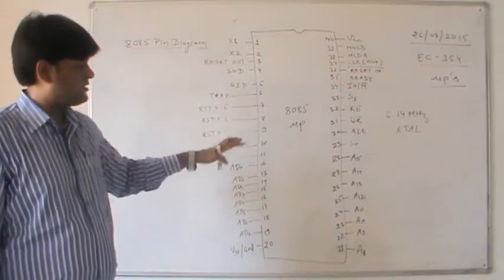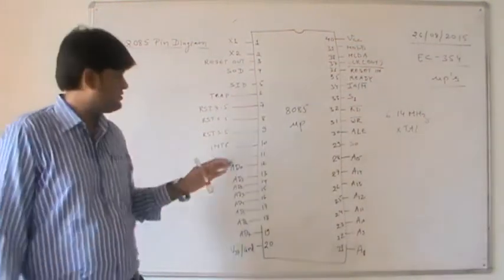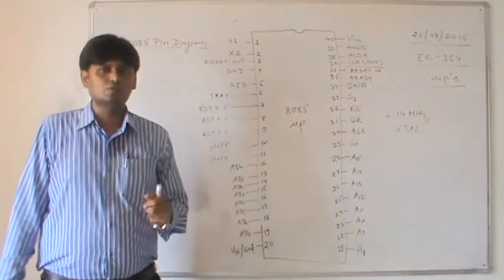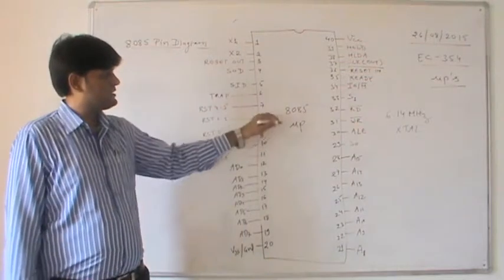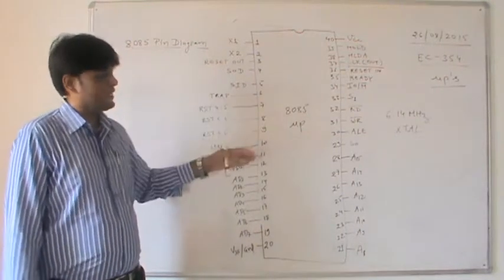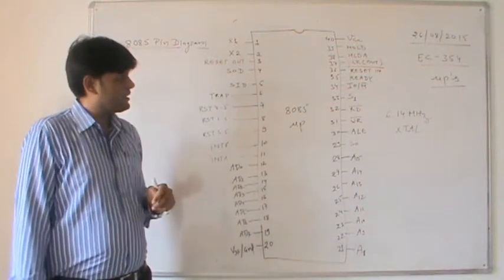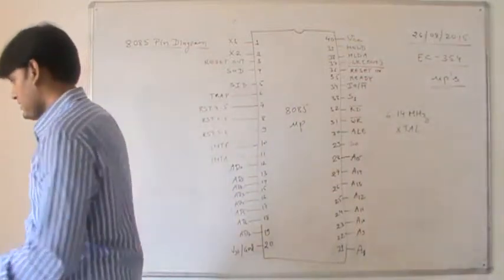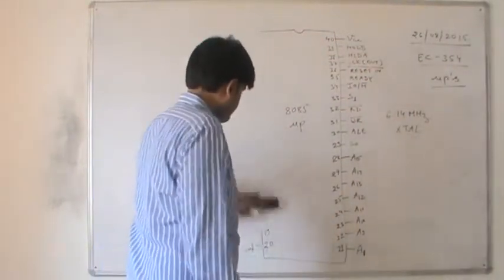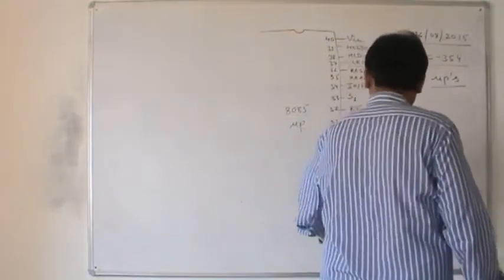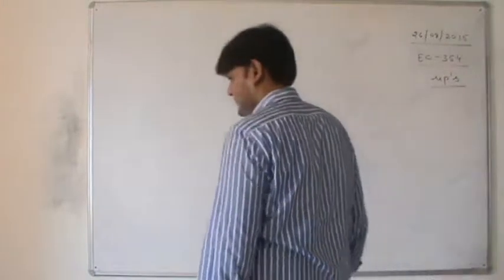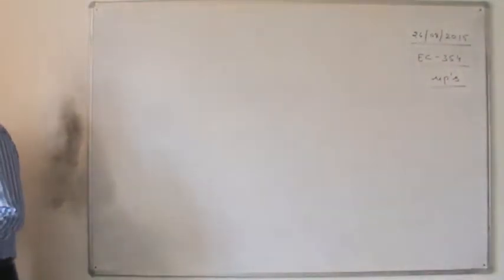That is all about the 8085 pin out diagram — all 40 pins have been covered in detail. In later discussions we will use these pins to see their role in peripheral interfaces. Now let us proceed further with the instruction cycle.